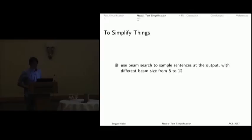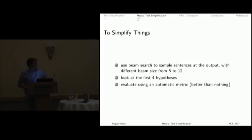When we simplify, we use beam search to generate the output. We use different beam sizes, since we didn't know exactly which beam size would fit best. We tried different versions from 5 to 12. One thing that we noticed is that if we sample different hypotheses, the first most likely hypothesis in the beam search algorithm and the first four hypotheses have different properties. So, we look at all the four hypotheses, and we also do some evaluation with the automatic metrics.